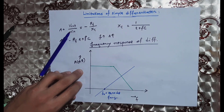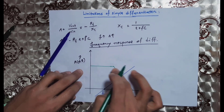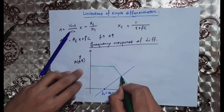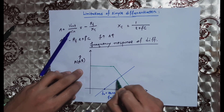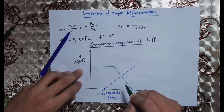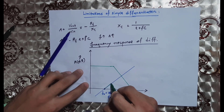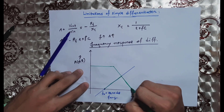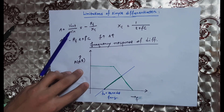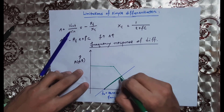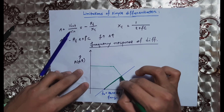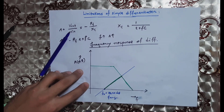When we see the frequency change, the gain is constant up to a particular frequency, after which the gain is reduced. Here we can see the open-loop gain response. The frequency response of the simple differentiator is shown on this graph. The maximum gain intersects the open-loop gain response at a particular point, and this intersection point is the gain of the differentiator.